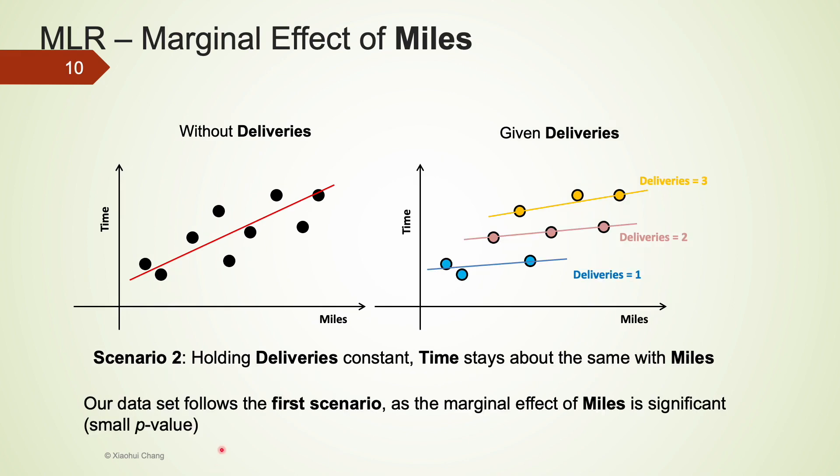Next, let's consider the second scenario. In this scenario, when we consider observations with deliveries equals to 1, we notice that time stays about the same for different levels of miles. The same can be said for observations with deliveries equals to 2 or 3. This scenario indicates that the effect on time is not from miles, but mostly from deliveries. This also means that the marginal effect of miles on time is not significant, different from what we have observed in the first scenario.